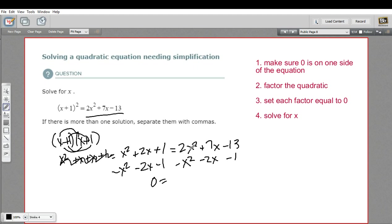And over here, 2x squared minus x squared is 1x squared. 7x minus 2x is 5x. And negative 13 minus 1 is negative 14.